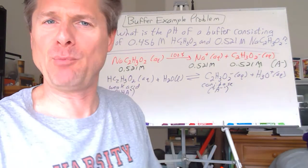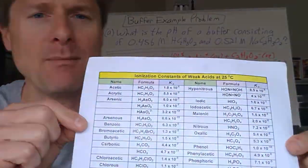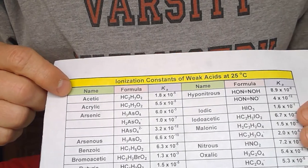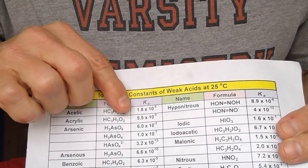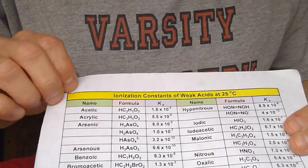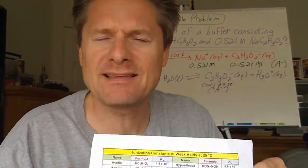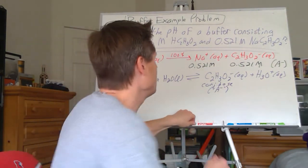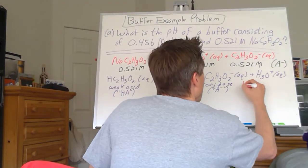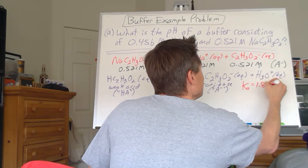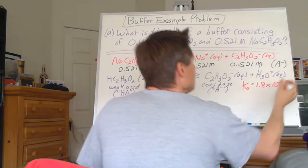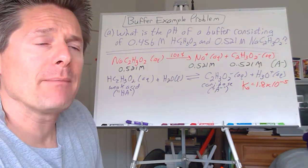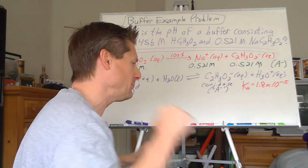Let's get our Ka table. Looking for acetic acid right at the top: Ka = 1.8 × 10⁻⁵. We've now got all the information we need to plug into the Henderson-Hasselbach equation.